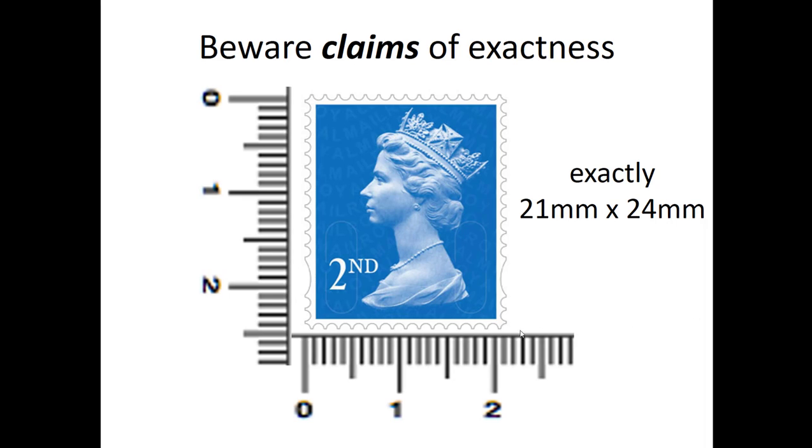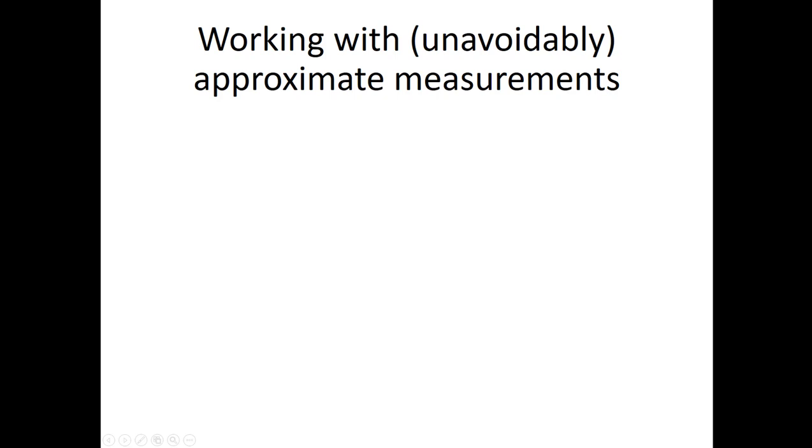It's clearly very close to 21 millimetres, but not exactly 21. In the same way, the height is very close to 24 millimetres, but we can't be sure it's exactly 24. Which begs the question of how do we deal with these unavoidably approximate measurements, which are what we deal with every day? We have to work with something called bounds.